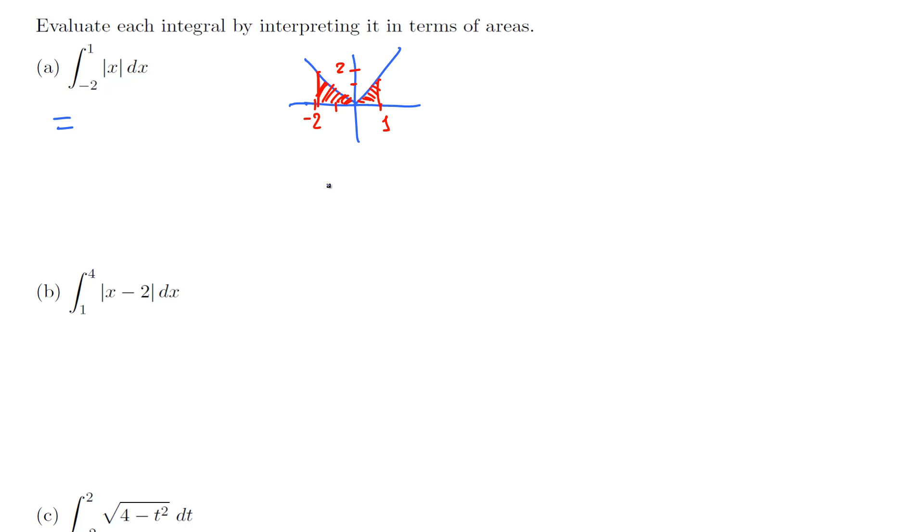This triangle has half times base, which is 2 units long, times height, which is also 2. That's 4 divided by 2, so 2. Plus this triangle: half times base times height, which is half times 2 and 1. That's 5 halves or 2.5 square units.